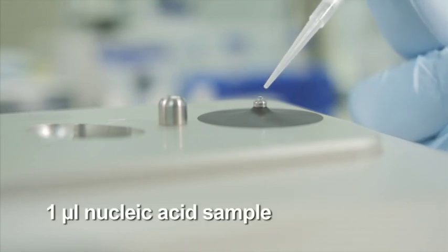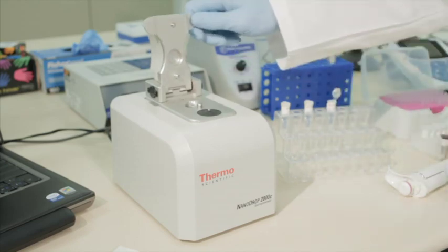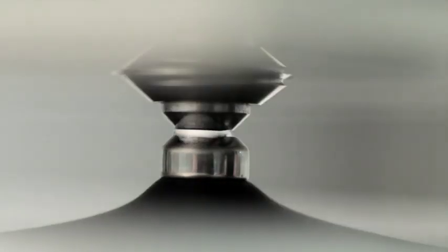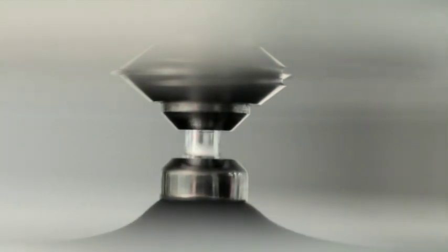Next, dispense 1 microliter of nucleic acid sample onto the lower optical pedestal and close the lever arm. Because the measurement is volume independent, the sample only needs to bridge the gap between the two optical surfaces for a measurement to be made.